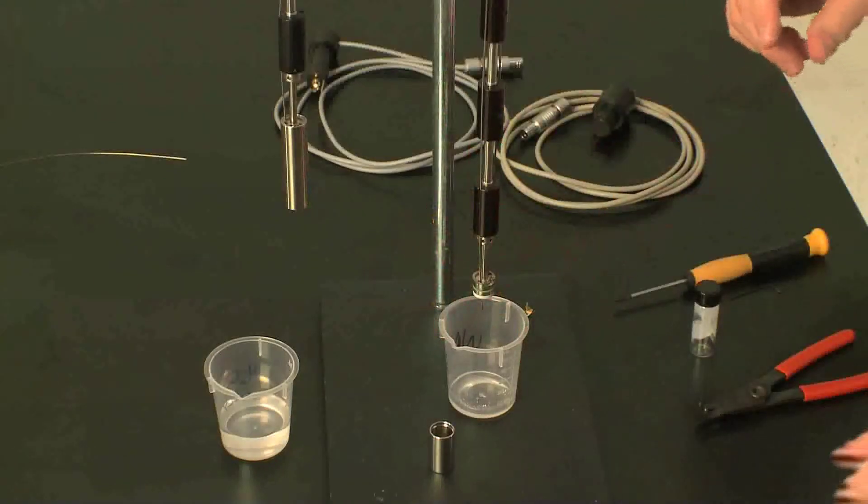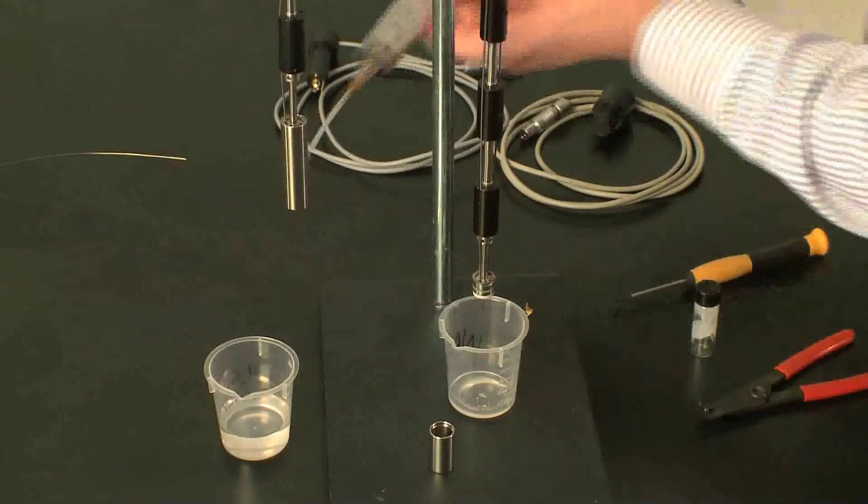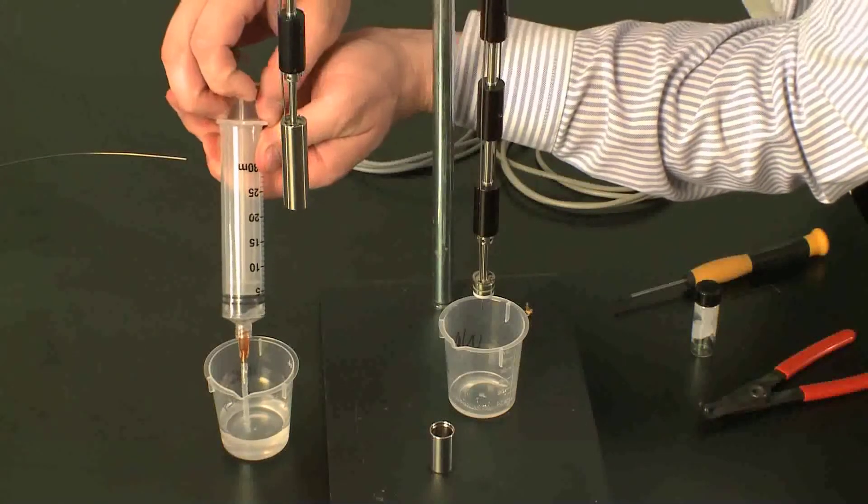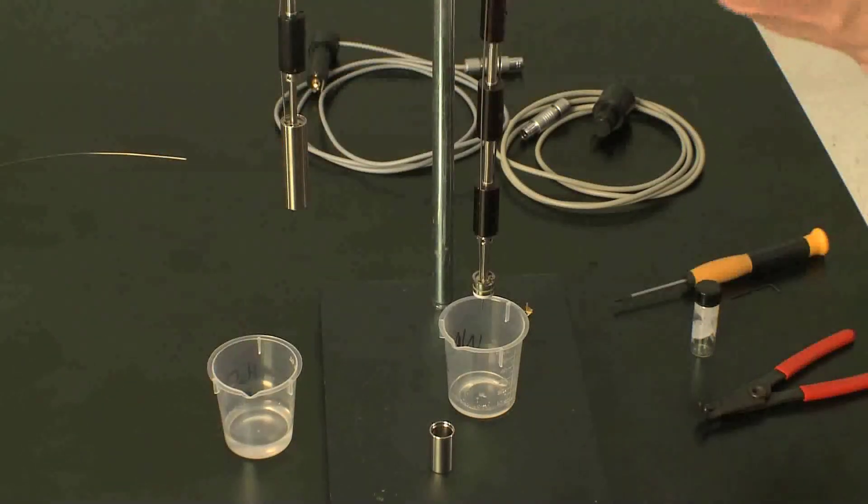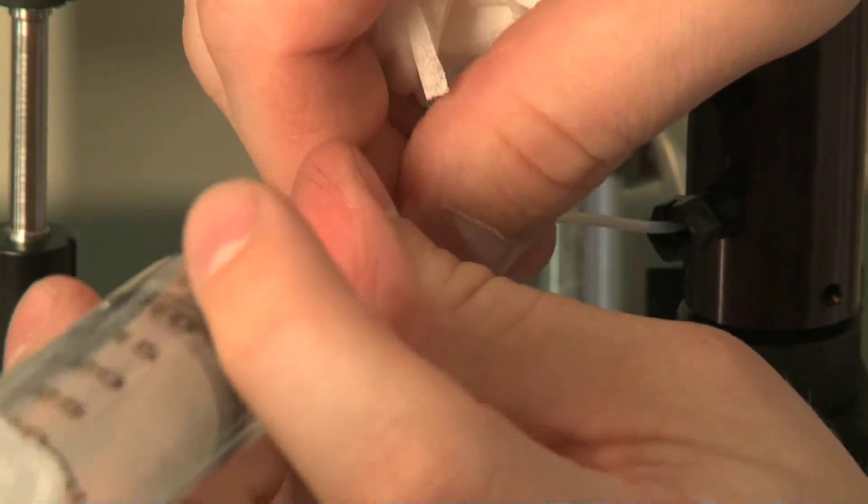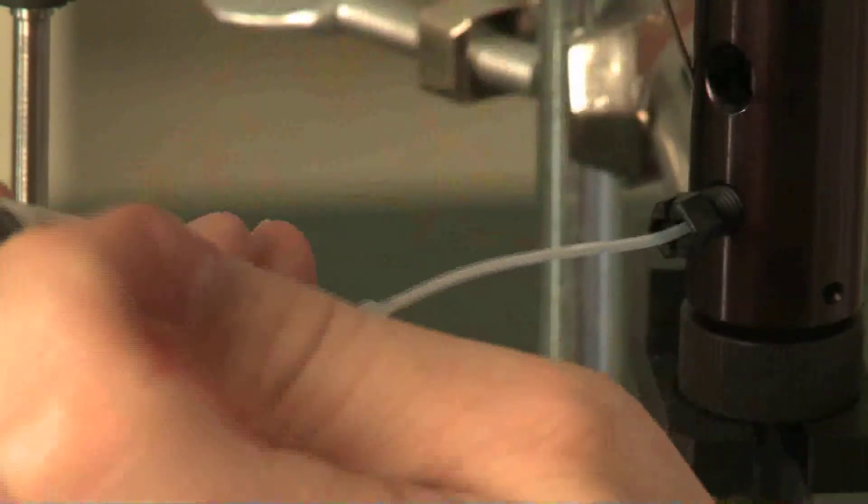We put a little waste beaker underneath the ampule. We're going to take about 5 to 10 milliliters of water and inject this water into the outlet of the ampule.